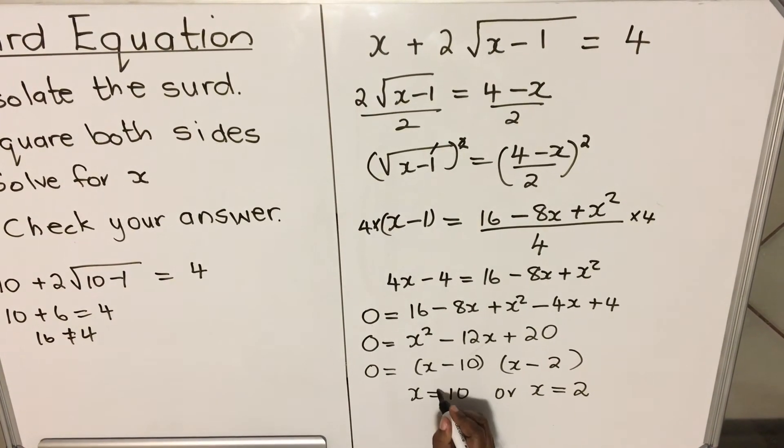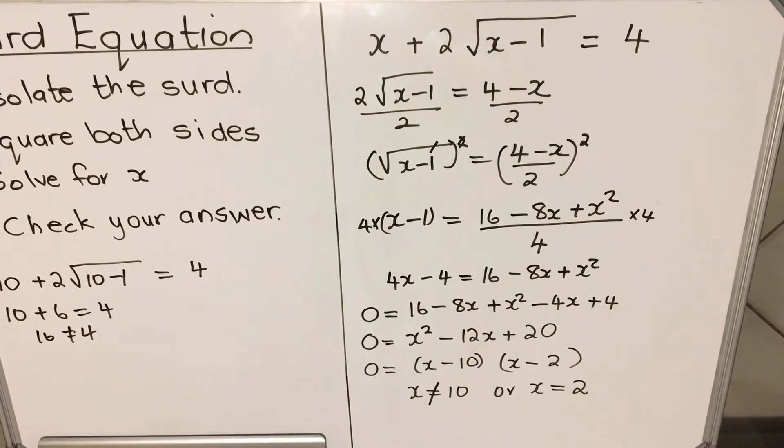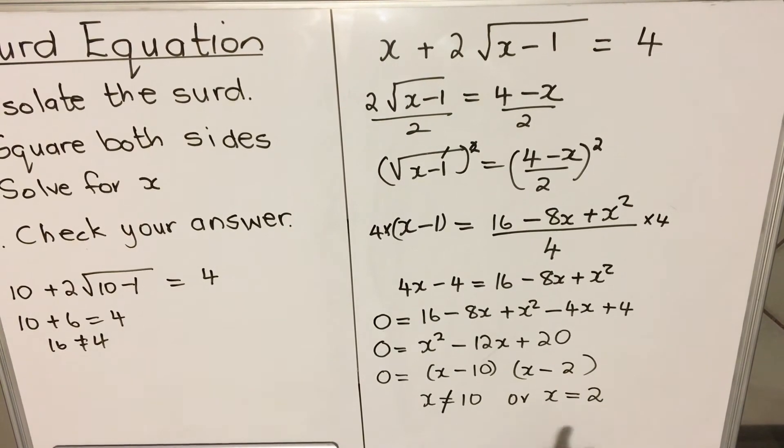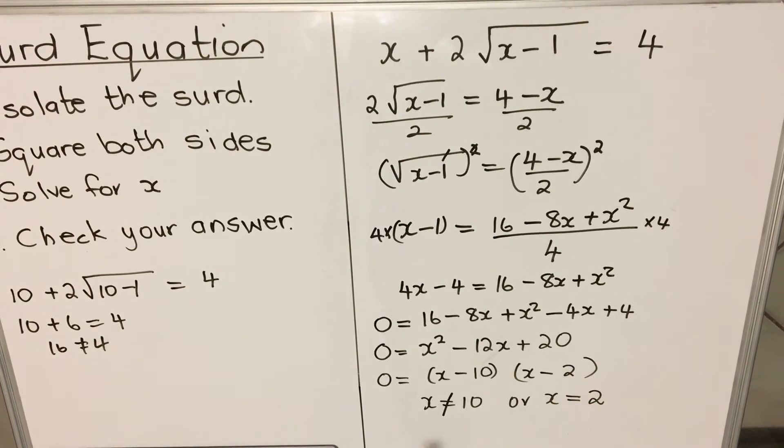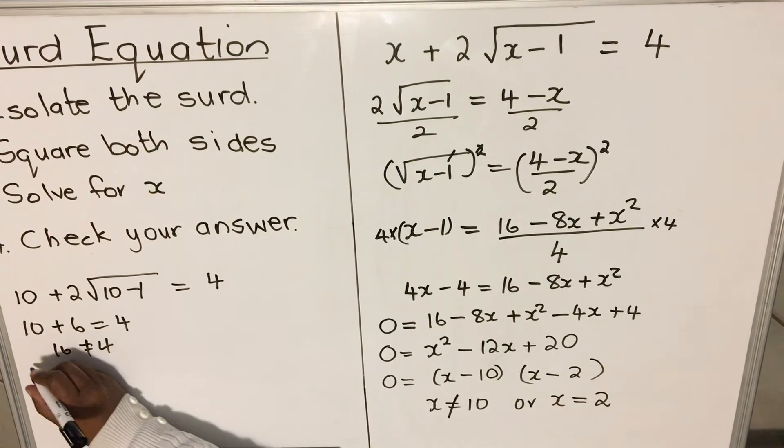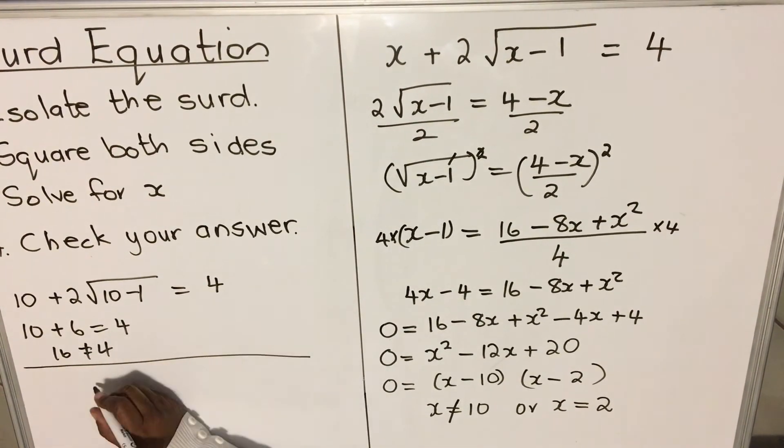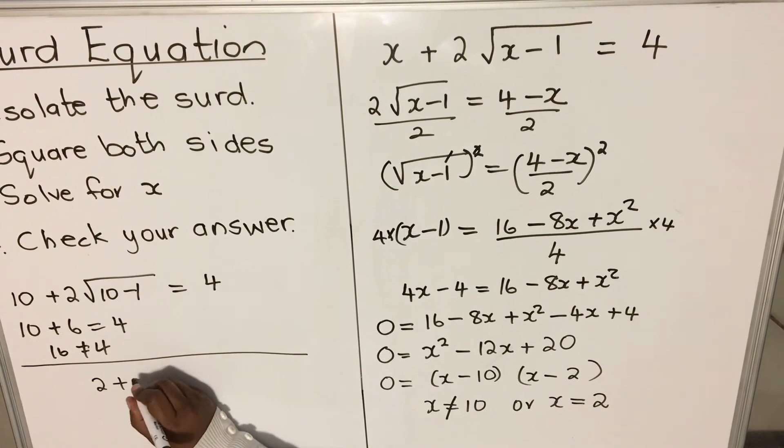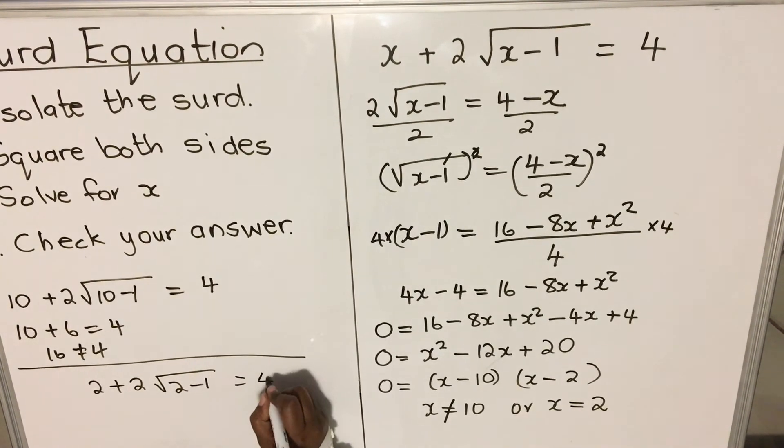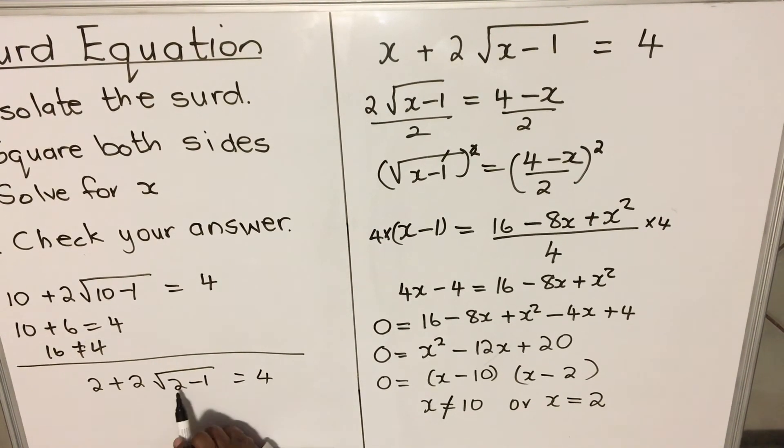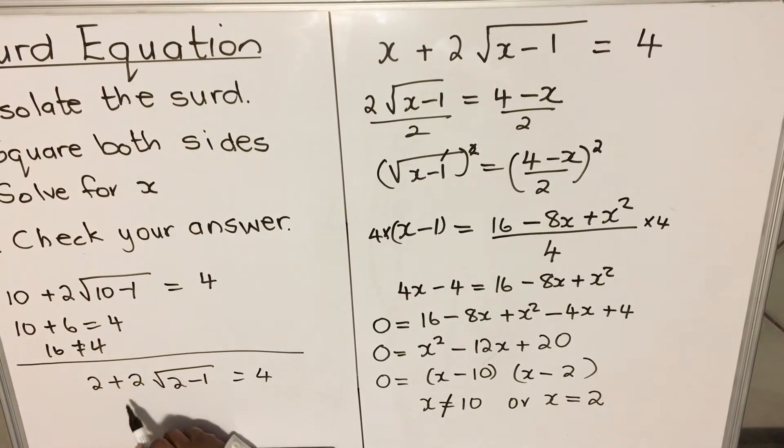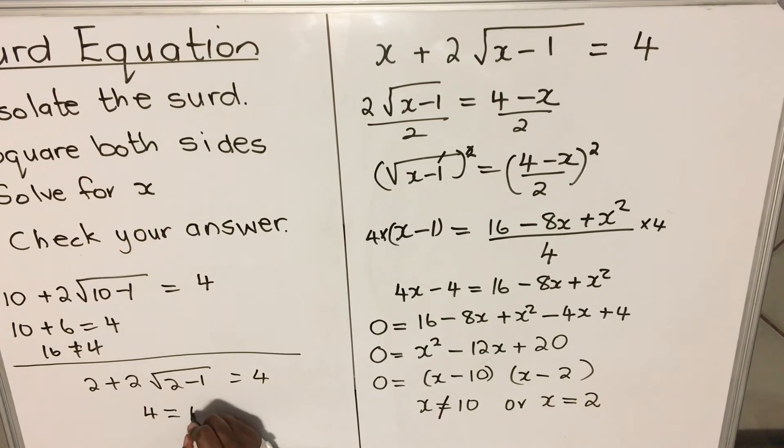You say that one is incorrect. The correct one is 2. Let's check 2. In an exam, you don't need to check both—if one is correct, the other is wrong—but let's check the 2. We'll have 2 + 2√(2-1) = 4. 2 - 1 is 1, √1 is 1, 1 times 2 is 2, 2 + 2 is 4 equals 4.